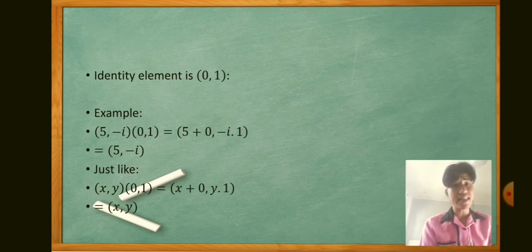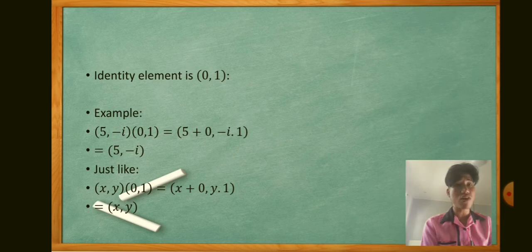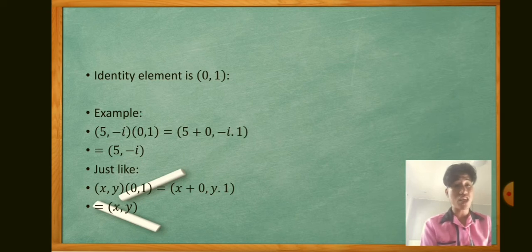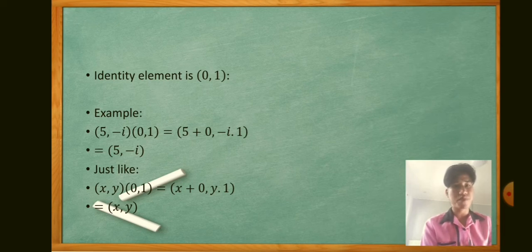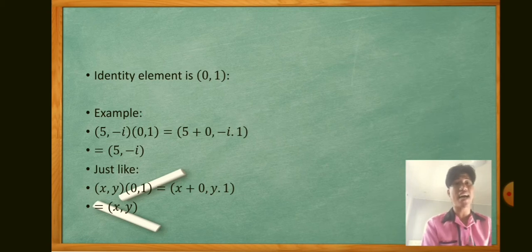The identity element is (0, 1). For example, (5, -i) times (0, 1): since G1 is under addition, 5 + 0 = 5, and since G2 is under multiplication, -i × 1 = -i. So the result is (5, -i), which is the same. Therefore (0, 1) is the identity element. In general, (x, y)(0, 1) = (x + 0, y × 1) = (x, y), confirming (0, 1) is the identity element of the group.